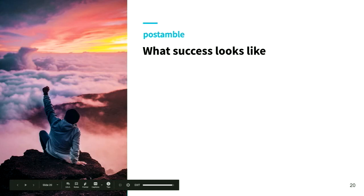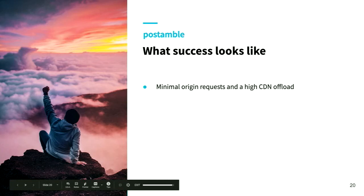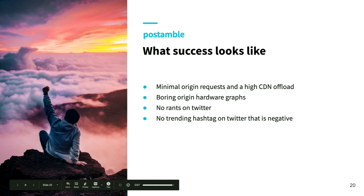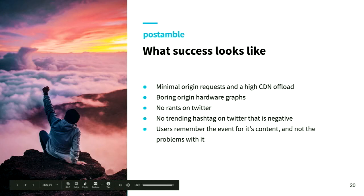To wrap this up and put a bow on it: what does success for your high-traffic event look like? You have minimal requests flowing through from your CDN - a good thing to aim for is 99.9% plus offload. If you can get in that realm, you have a much better time. Your hardware graphs are boring - boring is good, flat lines good. No rants on Twitter - at least no trending hashtag like CensusFail, which is a classic Australian trending hashtag. You don't want your own fail tag. Users will remember the event for its content and not the problems.